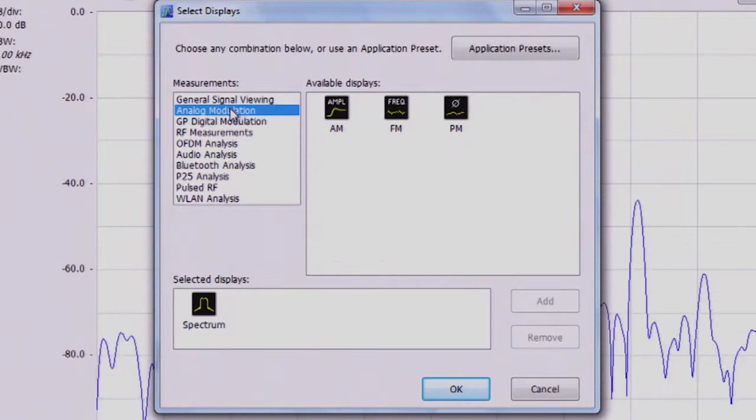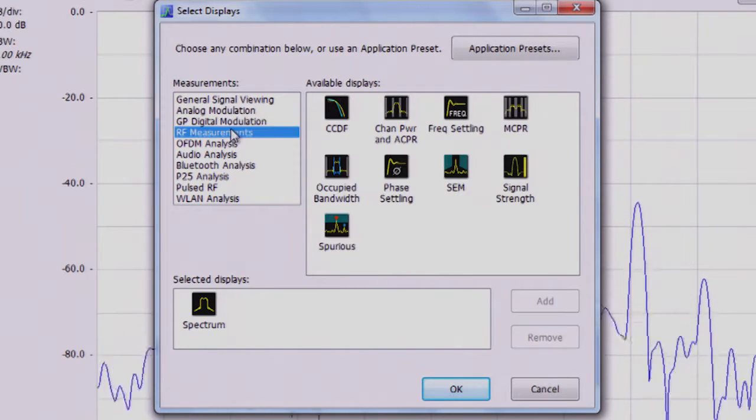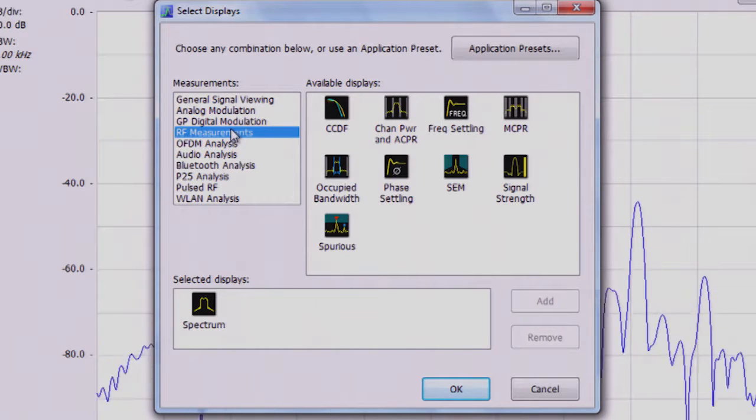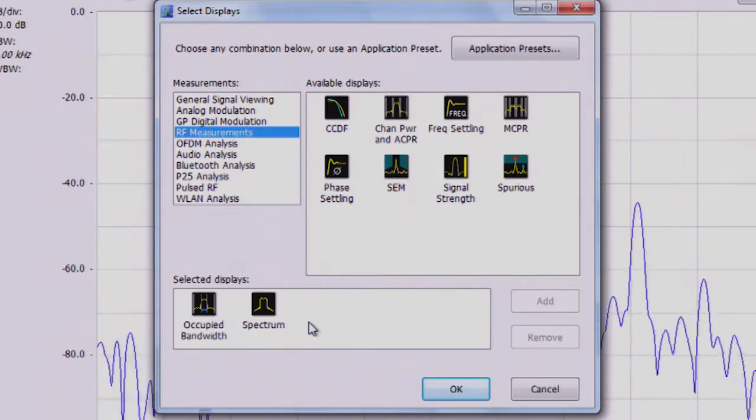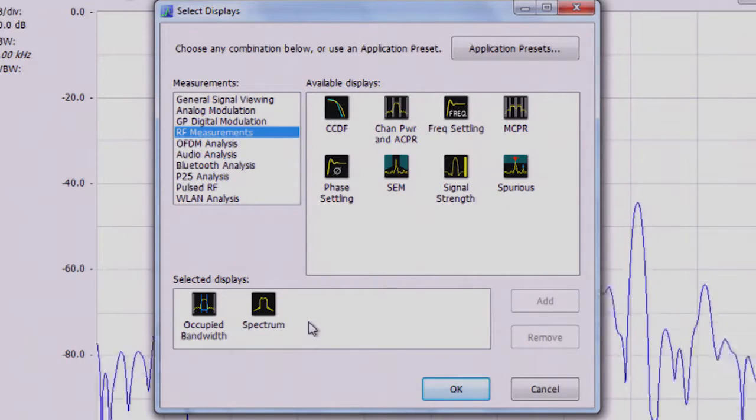You see analog modulation, digital modulation, and RF measurements. I can double click on occupied bandwidth to add that to the selected displays field, then hit OK.